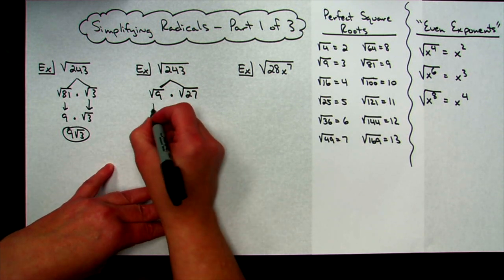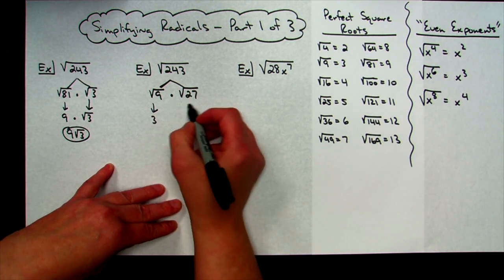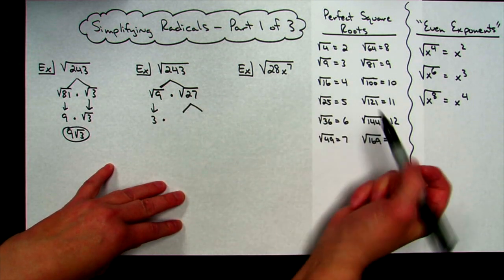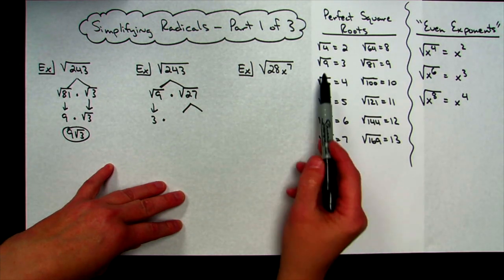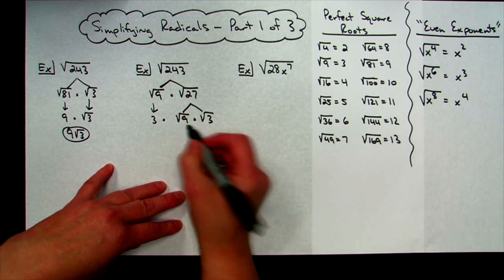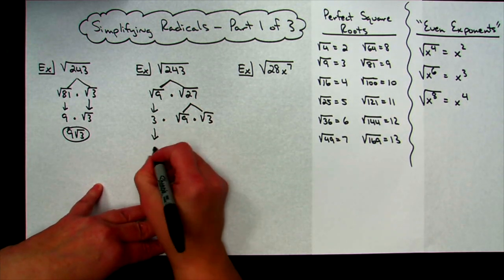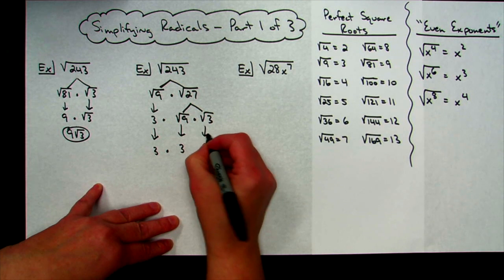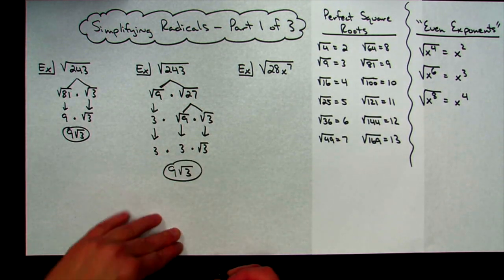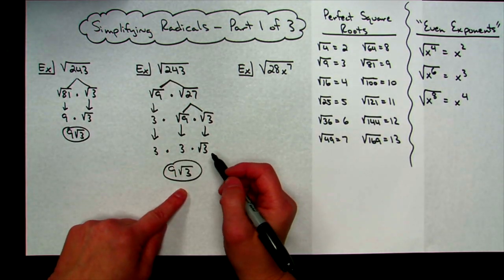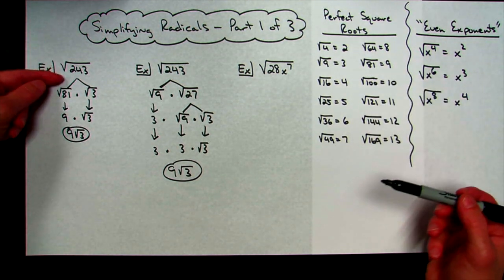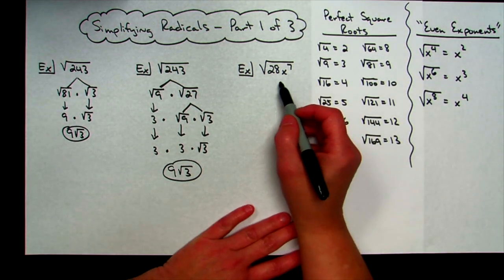If you stopped as soon as you found that 9 goes into 243, square root of 9 is 3, but then you have square root of 27, which is not fully simplified. You'd have to go back to the list and find another perfect square that goes into 27 — that's 9 again, since 9 times 3 is 27. Square root of 9 is 3, and radical 3 is as simplified as it can get. So 3 times 3 gives 9 radical 3. It just takes more steps, so your goal is to find the biggest perfect square root.